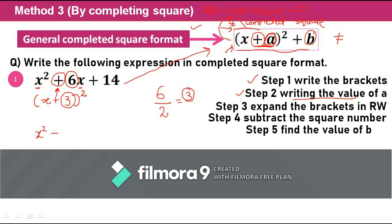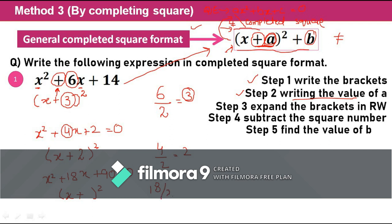For example, if I have x² + 4x + 2 = 0, step number 1 is writing the bracket, step number 2 part 1 is the sign, and to find the value of a the coefficient of the middle term is 4, so I divide 4 by 2 and get 2. One more example: x² + 18x + 90 = 0. Step number 2: I need to put the addition sign and the coefficient of the middle term is 18, divided by 2 gives 9. So I write 9 — that's my a.